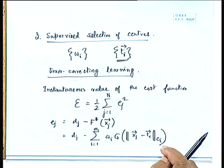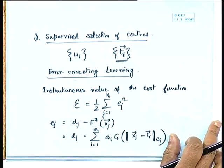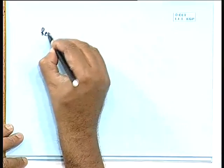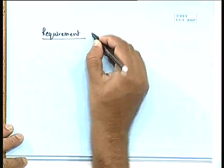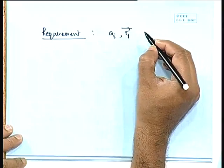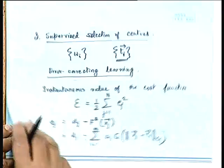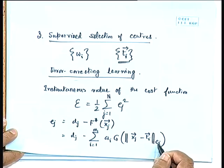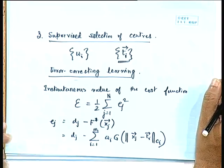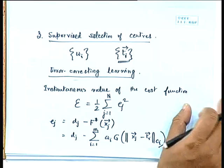Our requirement is to find the free parameters: W_i's, T_i's, and also the weighting matrix C_i — or equivalently sigma_i inverse, which indicates the spread of the Green's function — so that the error is minimized. We find the best set of W_i, T_i, and sigma_i inverse so as to minimize the error E. To update the linear weights, we differentiate the error E with respect to W_i. Because E_j involves a D_j independent of W_j and terms involving W_i, differentiating gives a result involving a sum over j of E_j(n) multiplied by the Green's function G with argument x_j minus T_i at iteration n with weighted norm C_i.